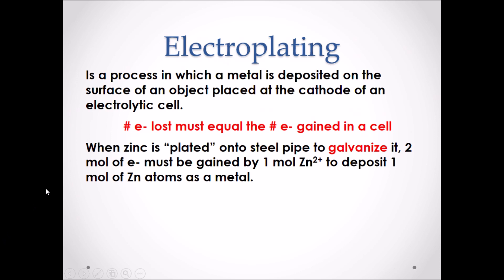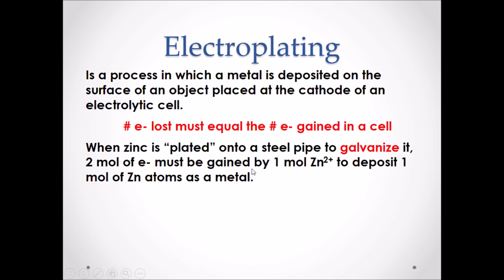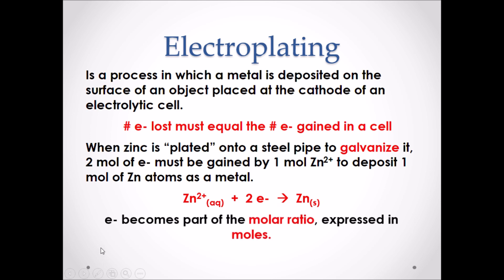Electroplating is a process in which a metal is deposited on the surface of an object placed at the cathode of an electrolytic cell. Remember, the number of electrons lost must always be equal to the number of electrons gained in a cell. For example, when zinc is plated onto a steel pipe to galvanize it, two moles of electrons must be gained by one mole of zinc two plus ions to deposit one mole of zinc solid atoms as a metal. This is represented in the half reaction below — electrons become part of the molar ratio and can be expressed in moles.